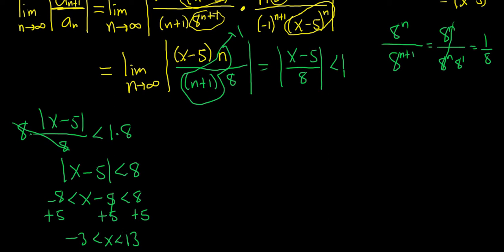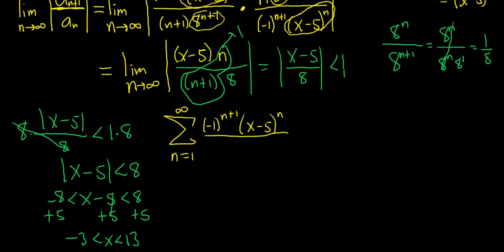The only thing left to do is check the endpoints. Let me write down the original series one more time so we can reference it: the sum from n=1 to infinity of negative 1 to the n+1 times x minus 5 to the n, over n times 8 to the n.